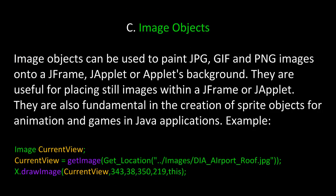Let's examine image objects. Image objects can be used to paint JPEG, GIF, and PNG images onto a JFrame, JApplet, or Applet's background. They are useful for placing still images within a JFrame or JApplet, and are also fundamental in the creation of sprite objects for animation and games in Java applications. Here's an example of how you would use an image object. First, you declare one — in this case imageCurrentView — and set it up with a graphics file using the method getImage. Then you call the method drawImage on a graphics object to display that image somewhere on your JFrame or JApplet.